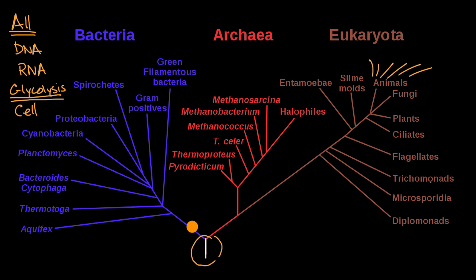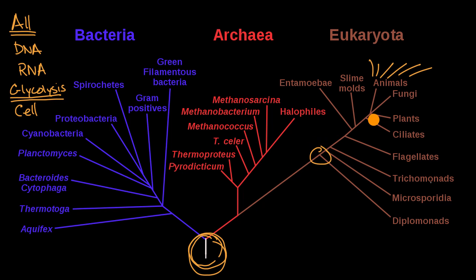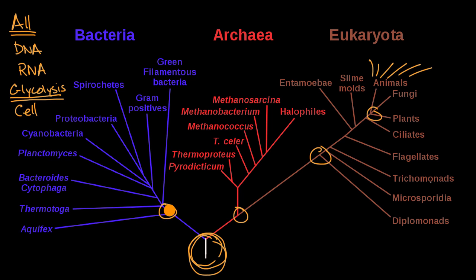So you might say, all right, I can maybe buy that there's this common ancestor right over here. But how do we construct this tree? How do we know when things branched off? Because some of these branches would have occurred hundreds of millions or billions of years ago, and none of us were around to observe that happening.